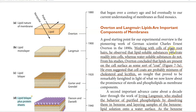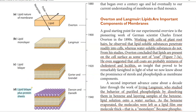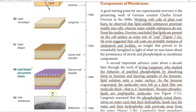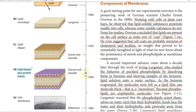There are various models that have already been suggested. These models include the lipid nature of the membrane, which was suggested by Overton, and the lipid monolayer which was suggested by Langmuir, and the lipid bilayer which was suggested by Gorter and Grendel, and the lipid bilayer plus protein sheets model. This model is also referred to as the bimolecular lipid leaflet model, which was proposed by Davison and Danielli.